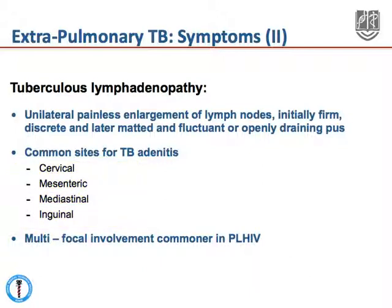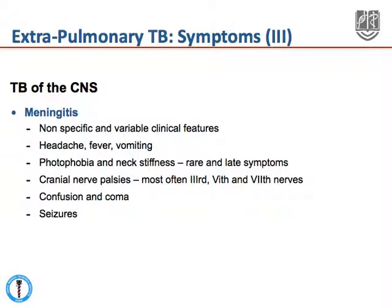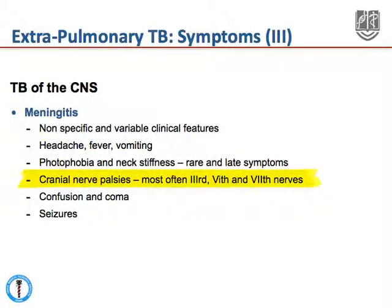In HIV-infected individuals, it is very common to see multifocal involvement of lymph nodes. In the central nervous system, tuberculosis can present as a meningitic process. The symptoms tend to be nonspecific and variable, including headache, fever, and vomiting. Photophobia and neck stiffness, which are very common in other forms of bacterial meningitis, are rare and tend to occur very late in the disease. Cranial nerve palsies are more common in TB meningitis, most often involving the third, sixth, and seventh nerve. Confusion, coma, and seizures tend to be poor prognostic symptoms.